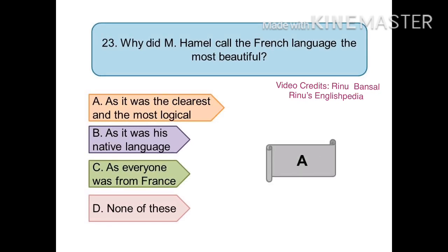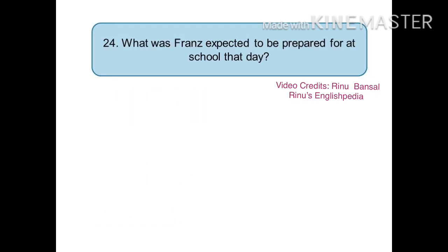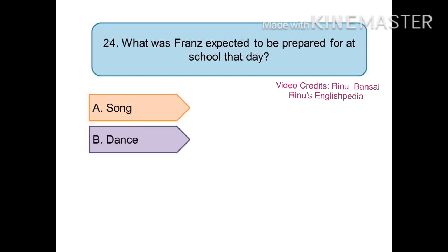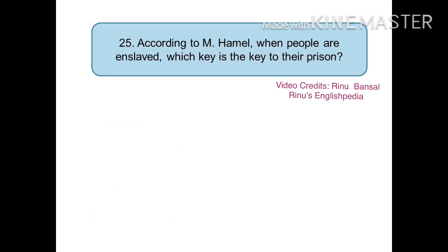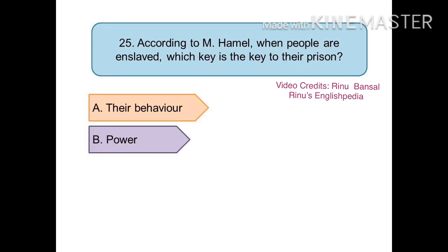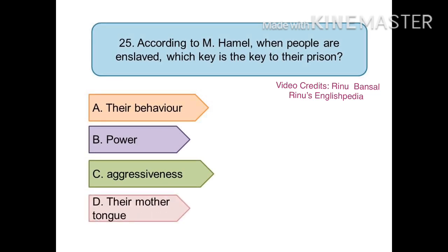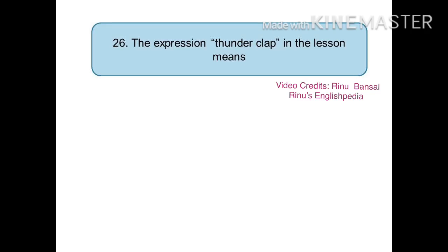The 24th question is: what was Franz expected to be prepared for at school that day? The options are (a) song, (b) dance, (c) essay writing, or (d) participles. The right answer is (d) participles. The 25th question is quite important: according to Monsieur Hamel, when people are enslaved, which is the key to the prison? The options are (a) their behavior, (b) power, (c) aggressiveness, or (d) their mother tongue. The right answer is (d) their mother tongue.